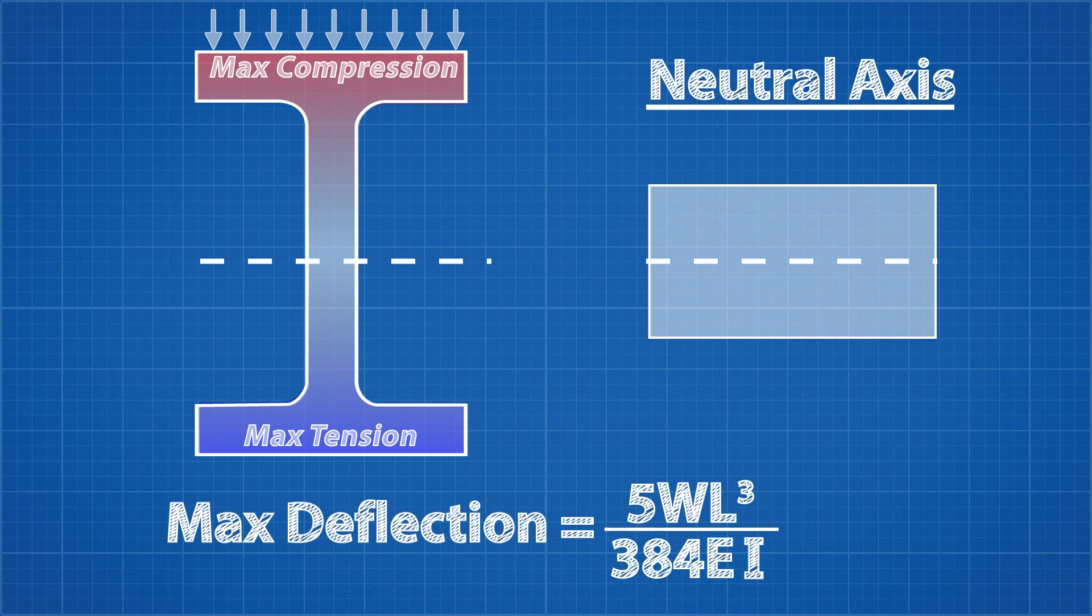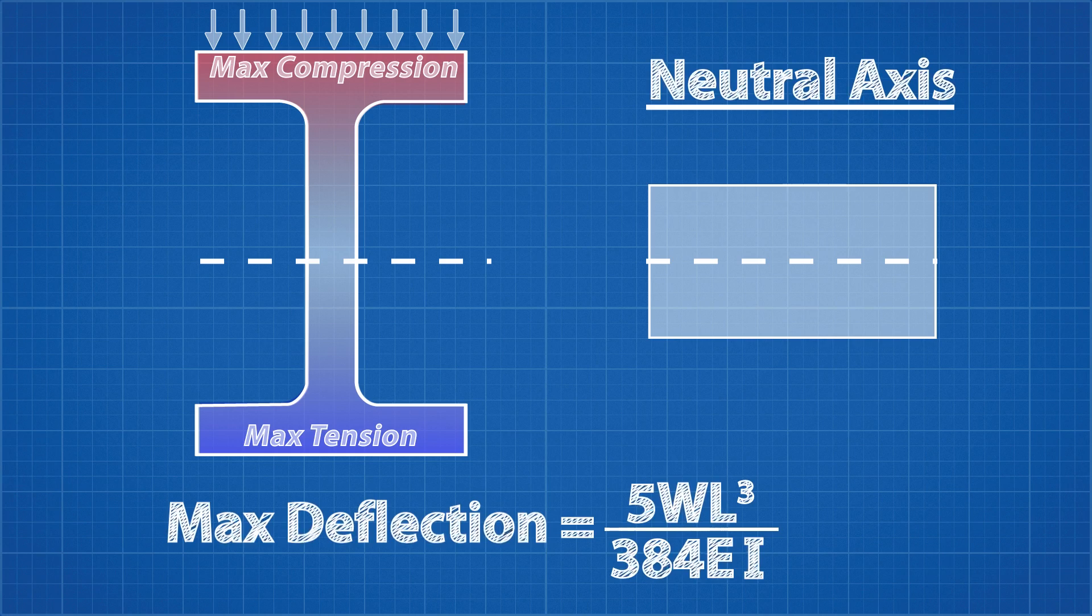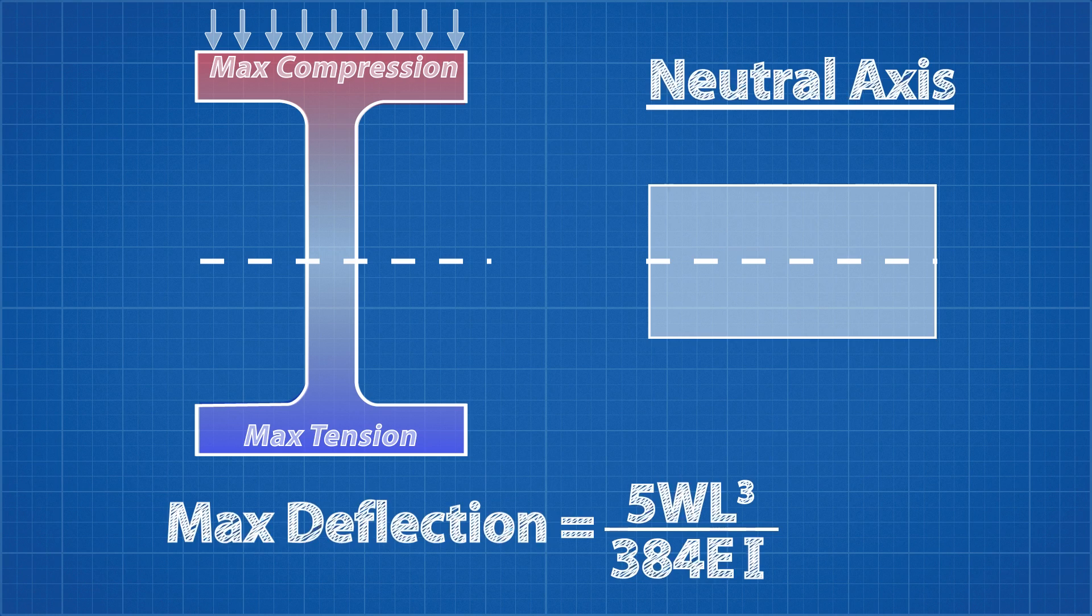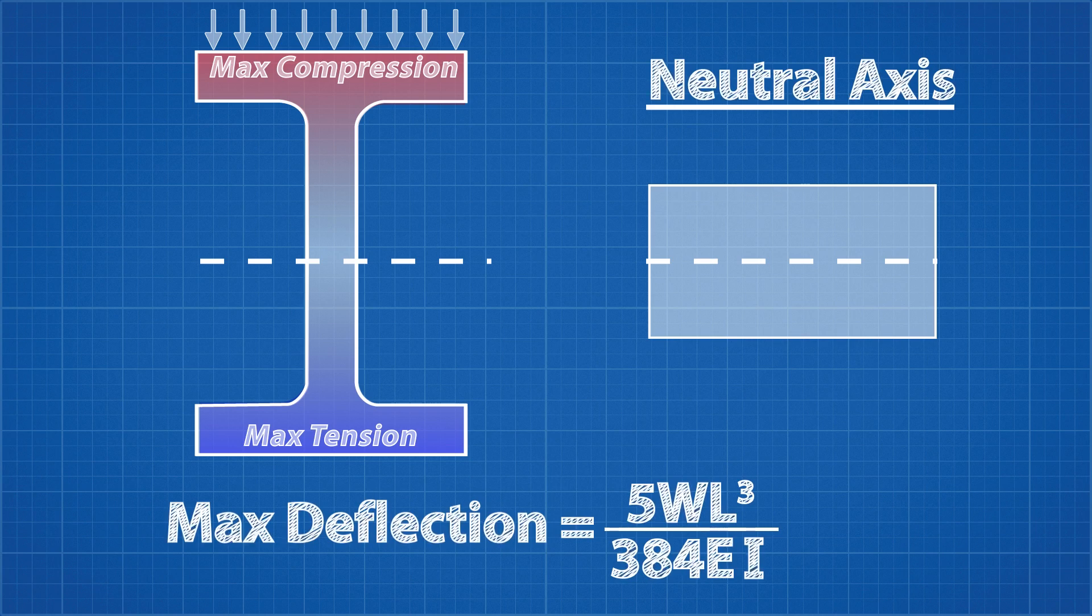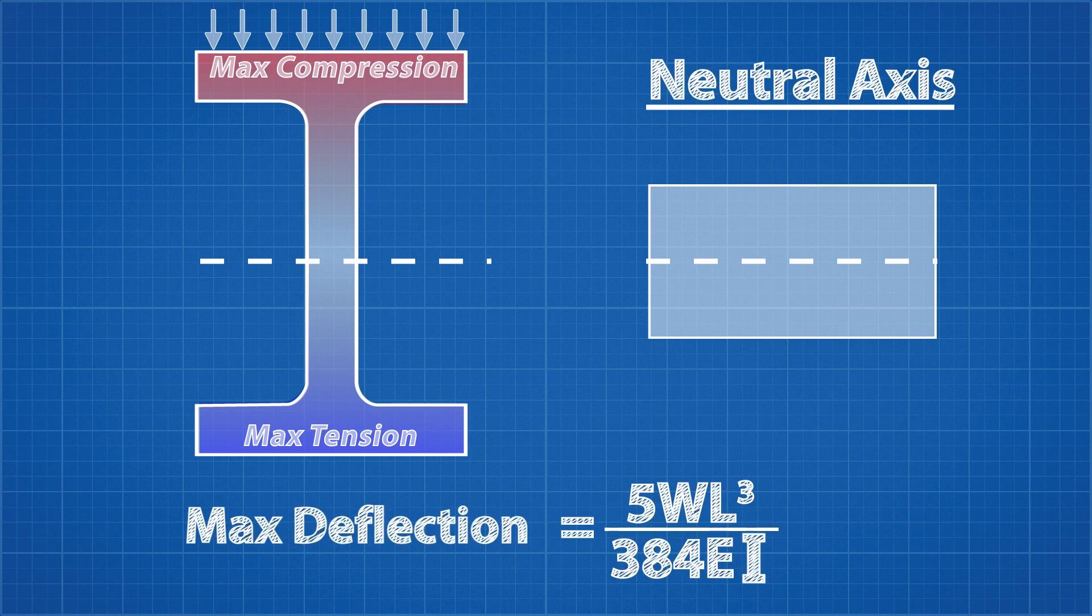Because the tension and compression is maximum the furthest from the neutral axis, we want to maximize the amount of material on the outside of the profile, where it is needed most. The more material further from the neutral axis, the larger the second moment of area will be. Applying that to the equation, we can see that a larger second moment of area would result in a smaller deflection.